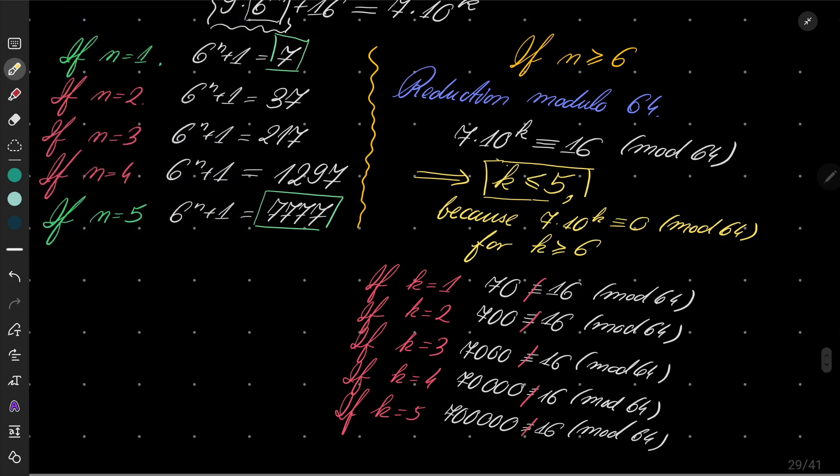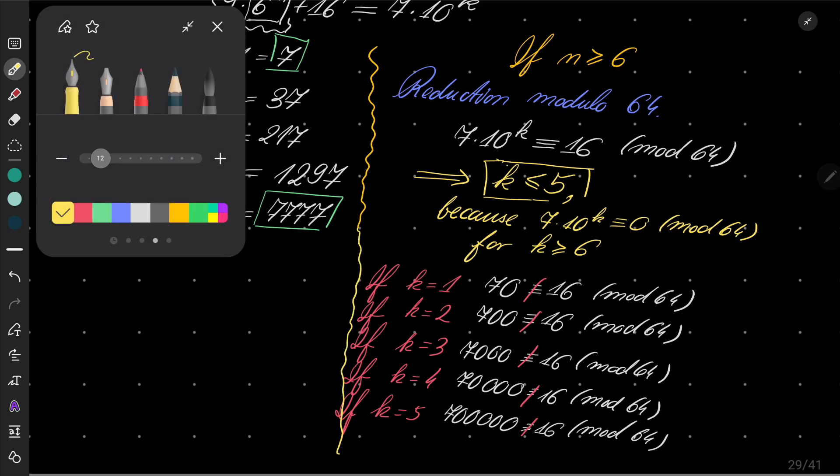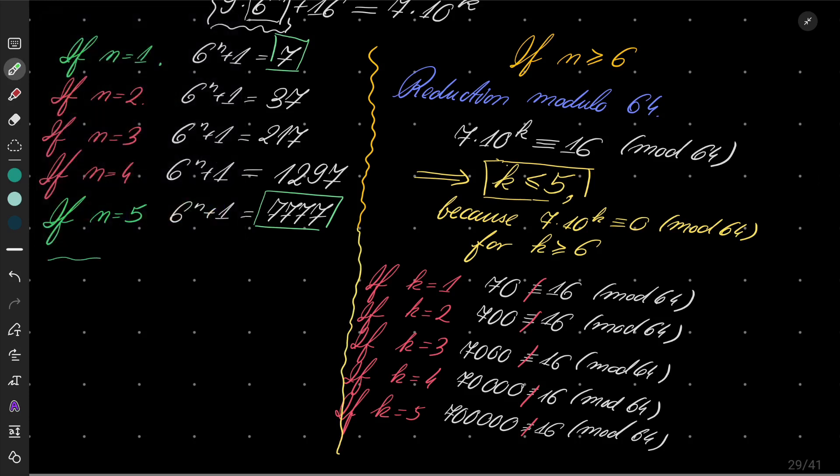So our second case does not give us any solutions. So all in all, there are only two solutions to our problem: namely, n is either 1 or n is 5.